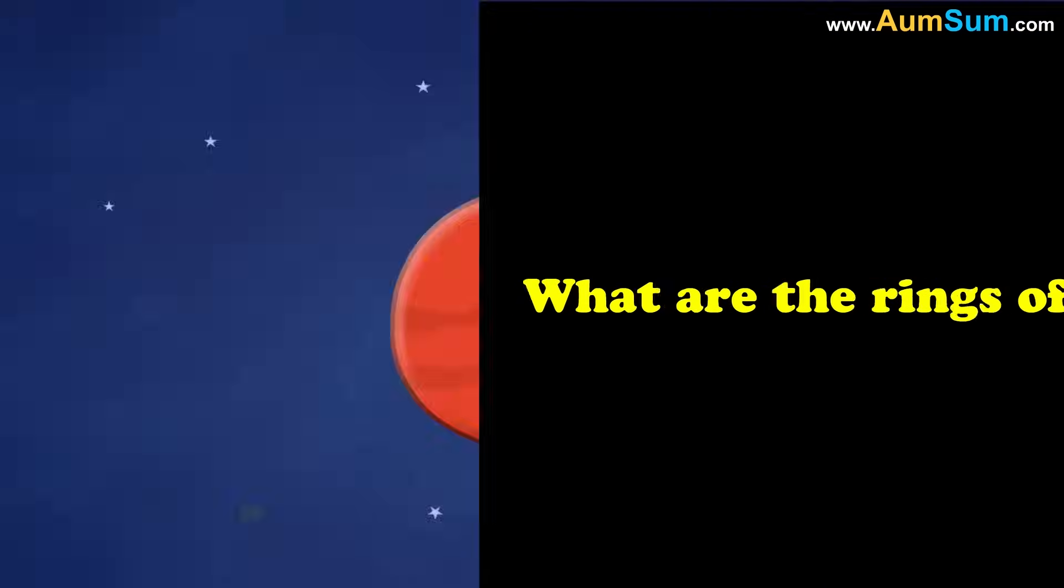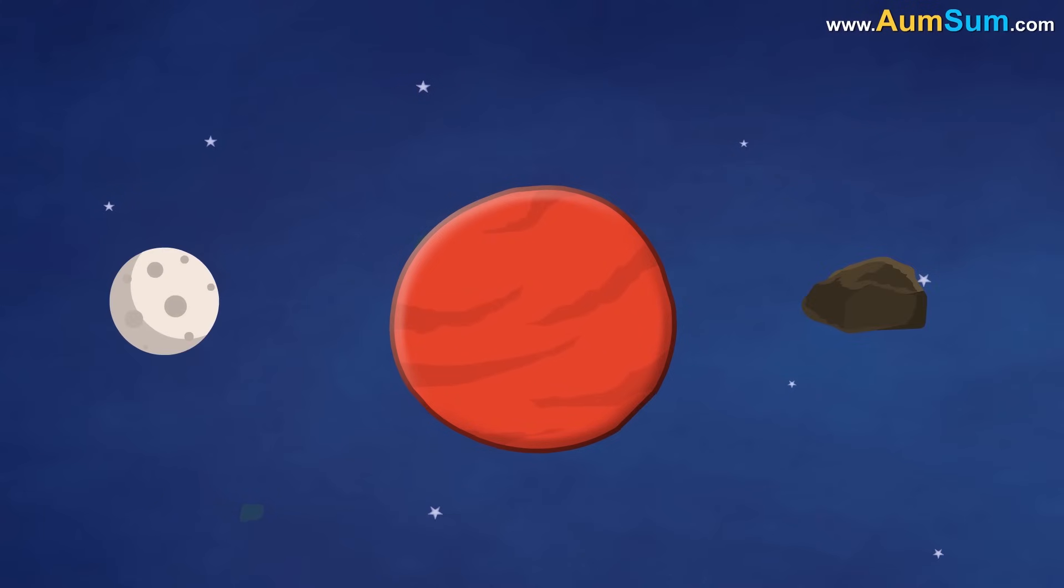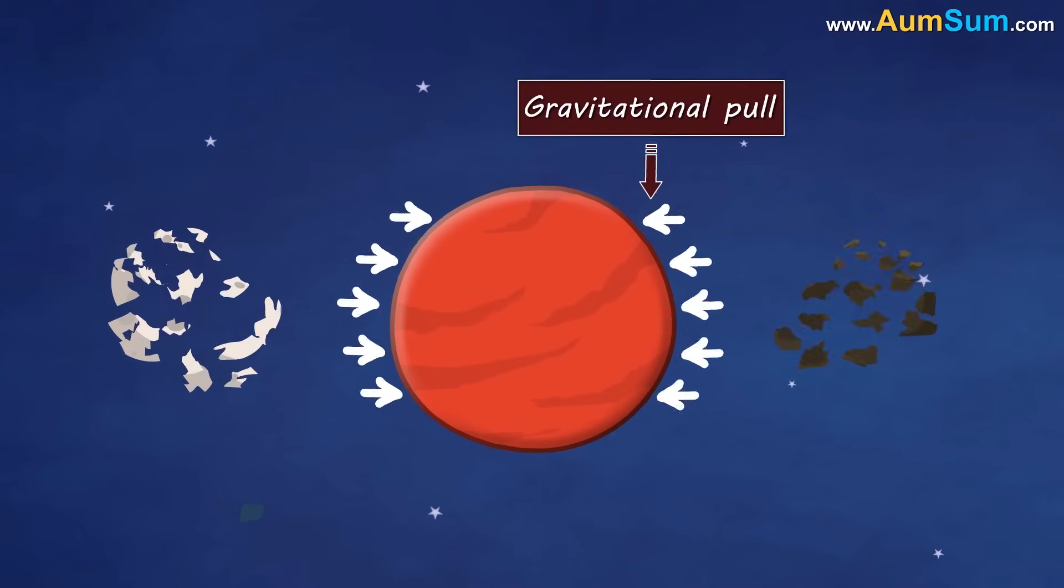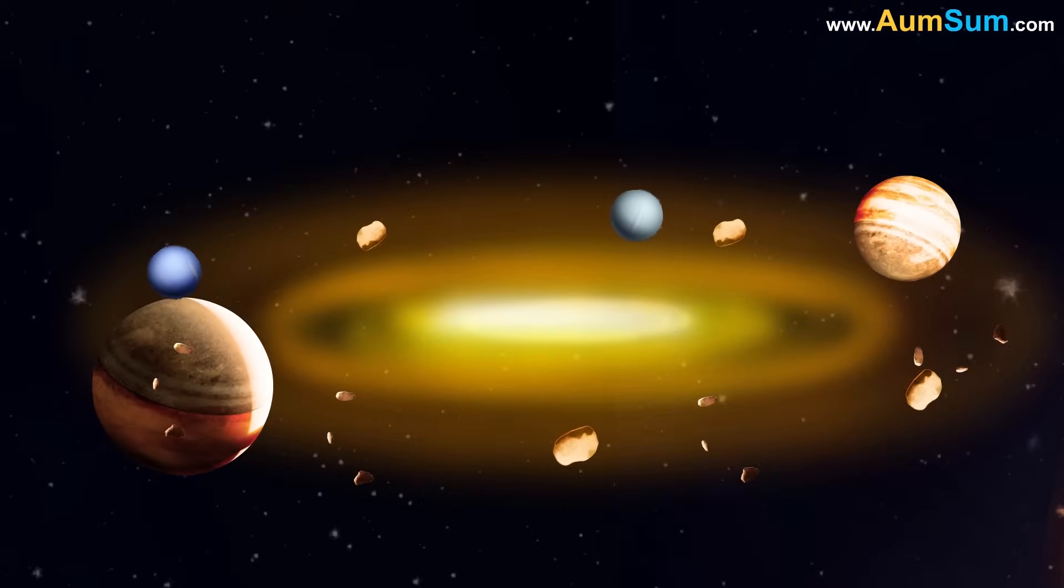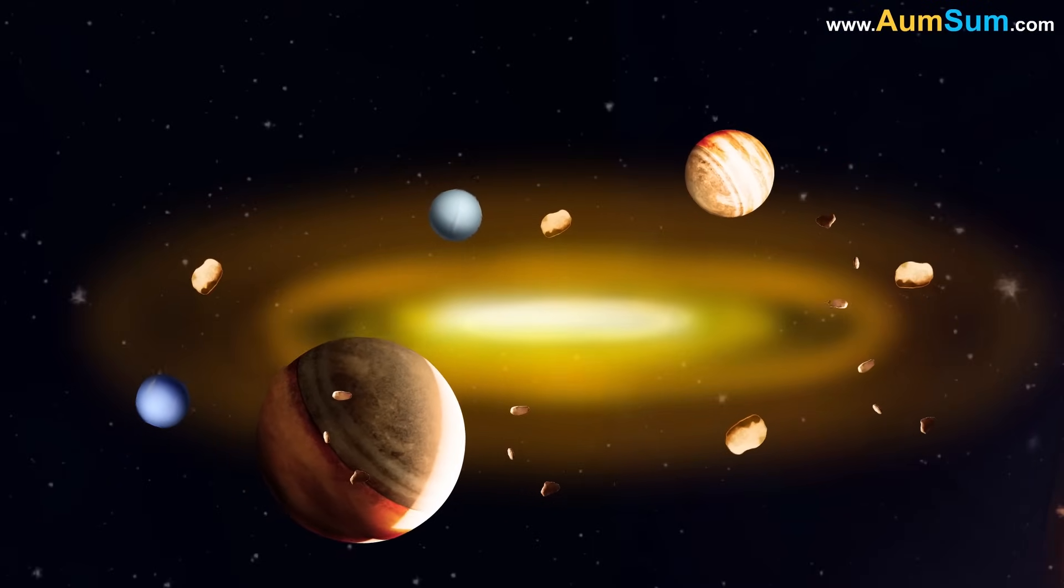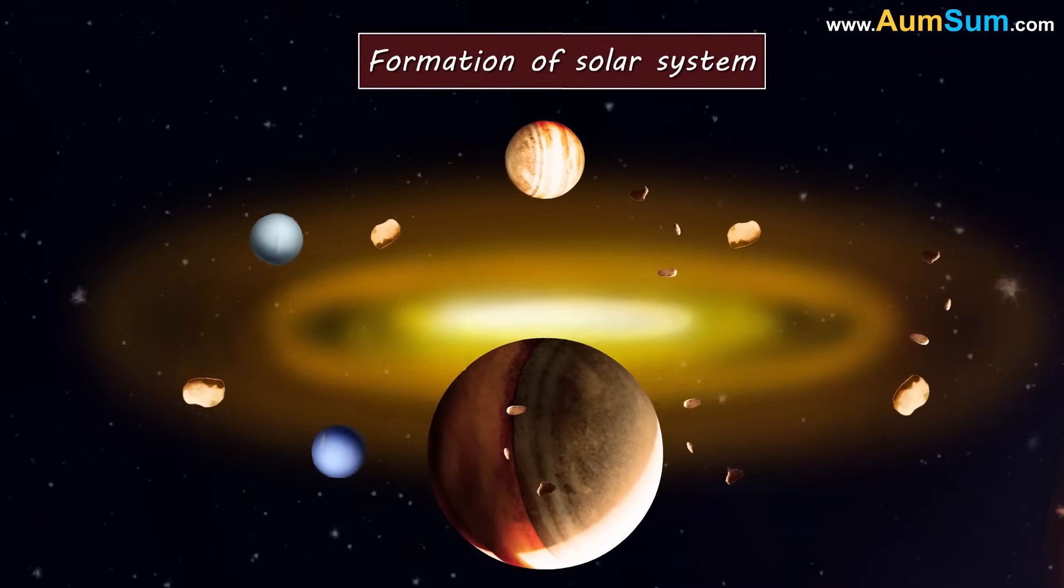First, let's see what are the rings of Saturn made of. They can be remnants of a moon, comet, etc. that got ripped apart due to Saturn's gravitational pull, or result of a large collision between two moons. Some even claim that rings are made up of debris left over during the formation of our solar system.